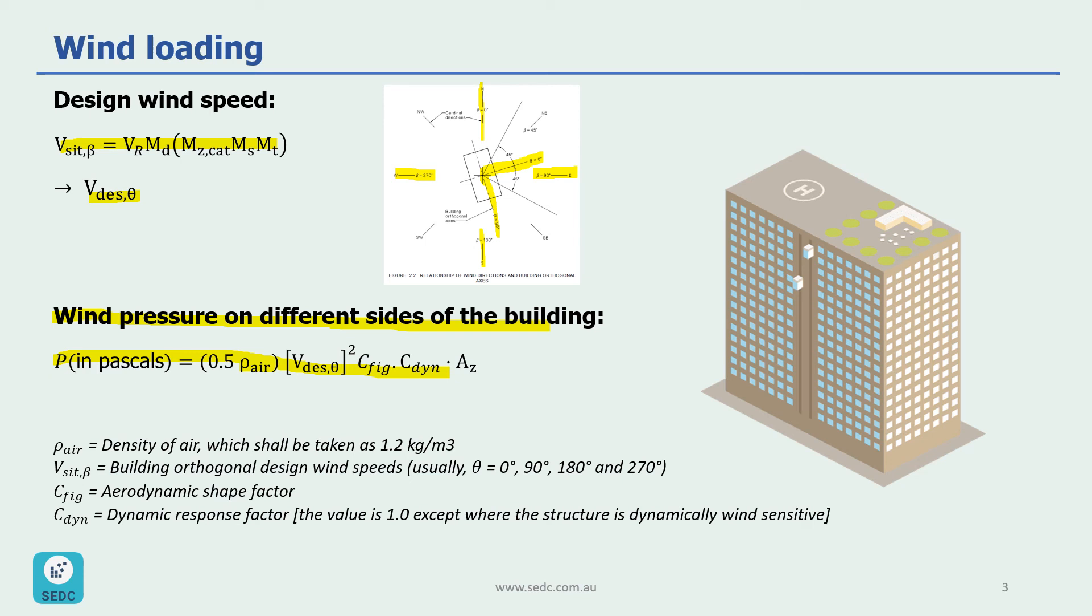C_fig, which is aerodynamic shape factor, which we are going to go to a lot of detail in the next few slides. And then C_dynamic, which is dynamic response factor, which is usually 1.0 except where the structure is dynamically wind sensitive. This is usually the case for very tall buildings. And then we have A_s, which is tributary area for the wind.